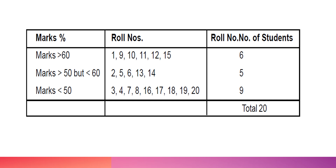That is why classification of data is useful. Here I have divided the values into classes — that is called classification of data. The classes are: marks above 60%, marks between 50% and 60%, and marks less than 50%. These three classes make up the classification. The table I have made with rows and columns — marks percentage, roll numbers, and total students — is called tabulation of data.